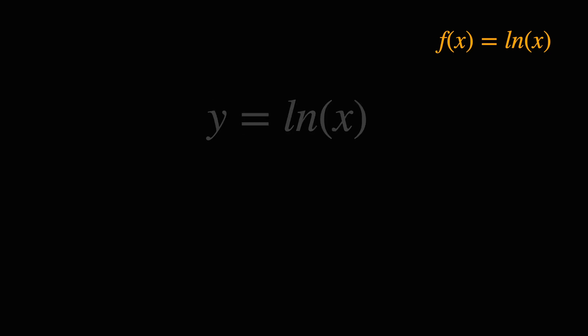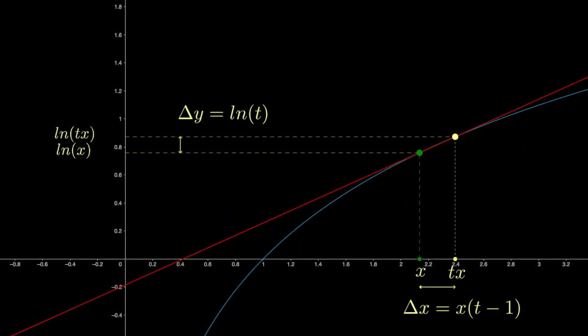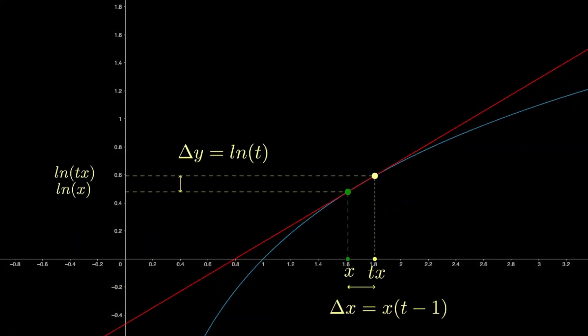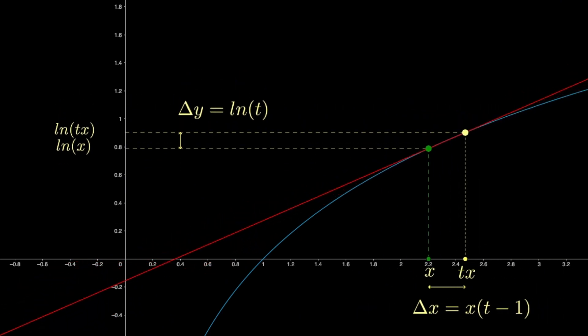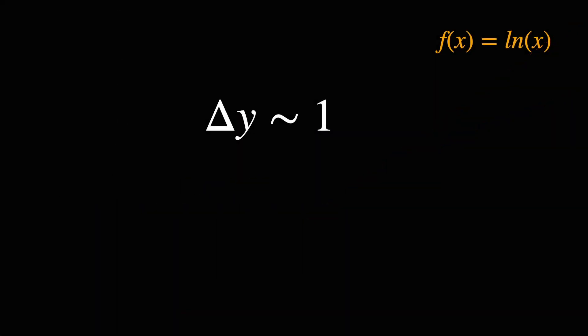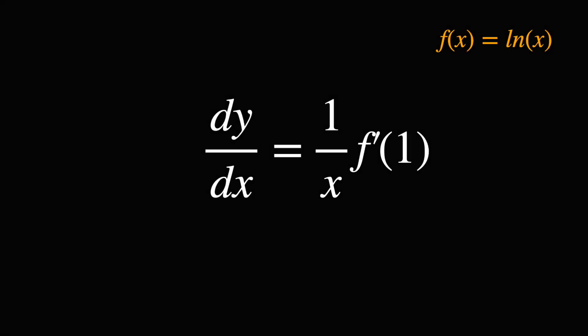For a fixed vertical distance, the horizontal distance has to be proportional to x. So the slope of the secant line for fixed t must be proportional to 1 over x, which holds as we take the limit. And again, the proportionality constant has to be f prime of 1.